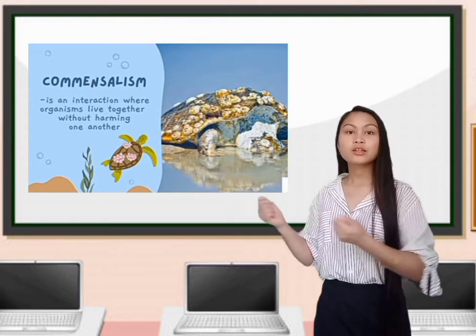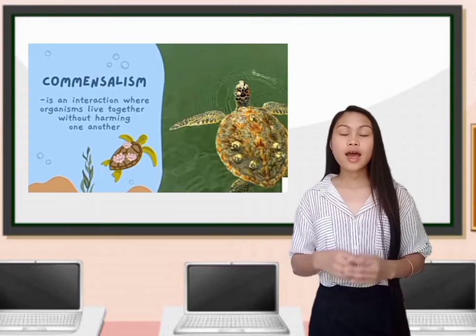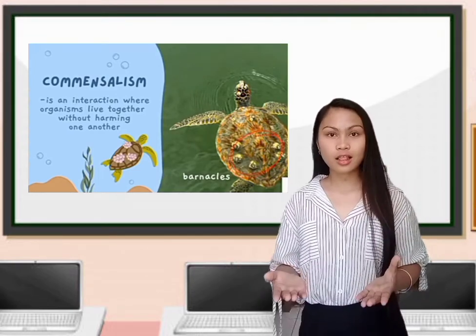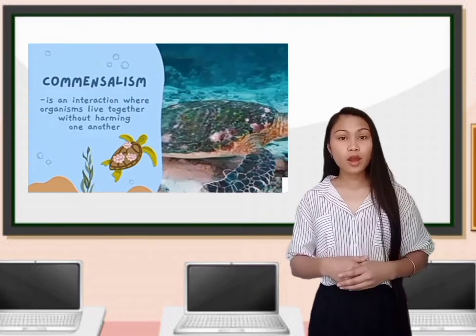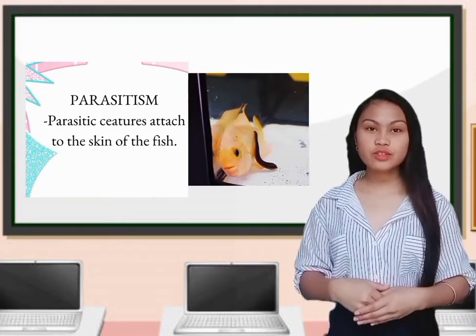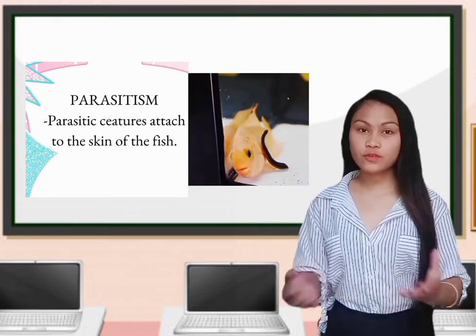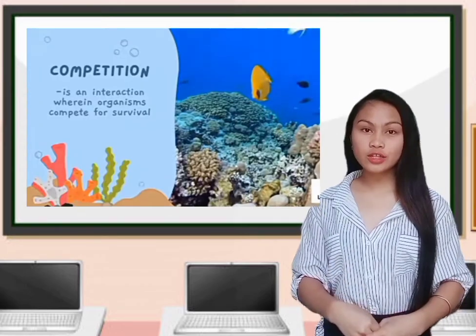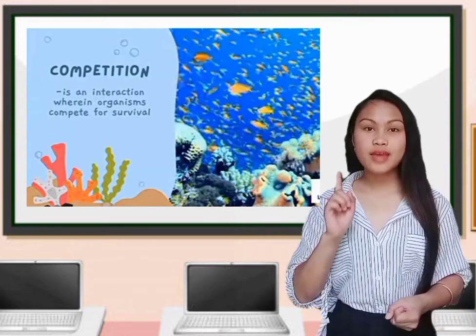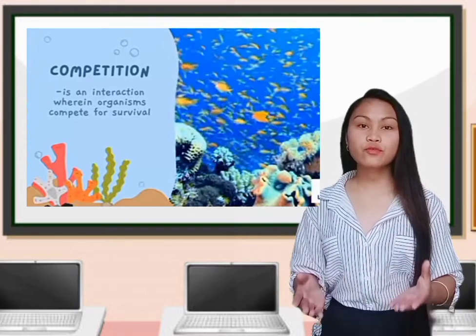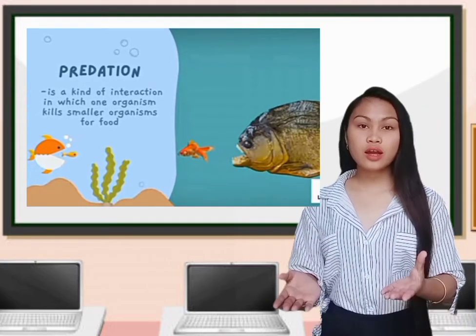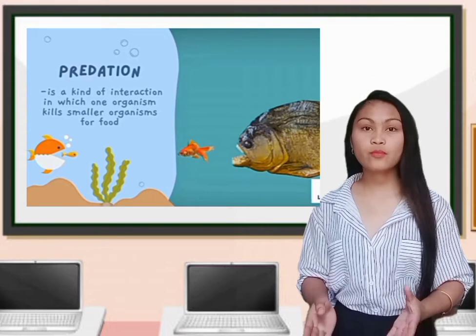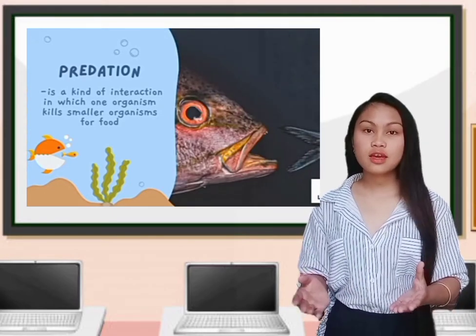Commensalism occurs when two organisms live together without harming each other. An example is barnacles attached to the shell of a turtle — when the turtle swims, barnacles are able to get nutrients from the water, while the turtle is not harmed. Parasitism involves parasitic creatures such as crustaceans or leeches attached to the skin of a fish. Competition is an interaction where organisms compete for survival, such as fishes competing for food and dissolved oxygen in the water. Predation is when one organism kills smaller organisms for food, such as big predatory fishes eating small fishes.